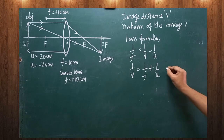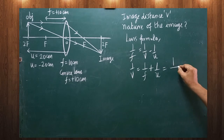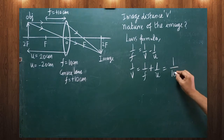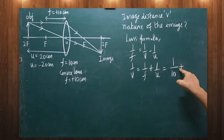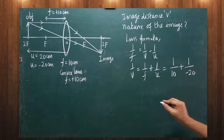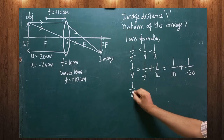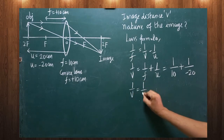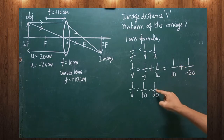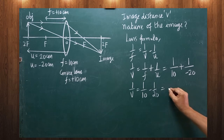The value of f is positive, so we write 1 by 10. The value of u is minus 20 centimeters, so 1 by u is 1 by minus 20. Therefore: 1 by v equals 1 by 10 minus 1 by 20. This can be written as 1 by 10 minus 1 by 20.